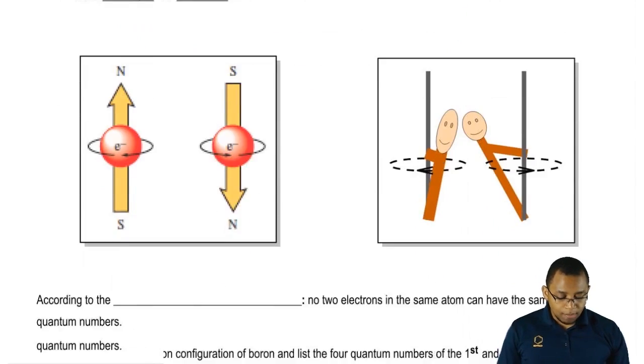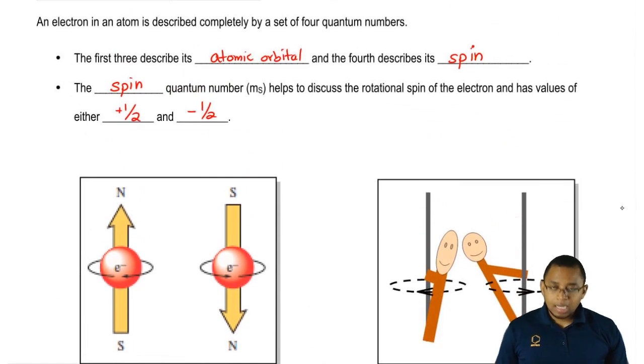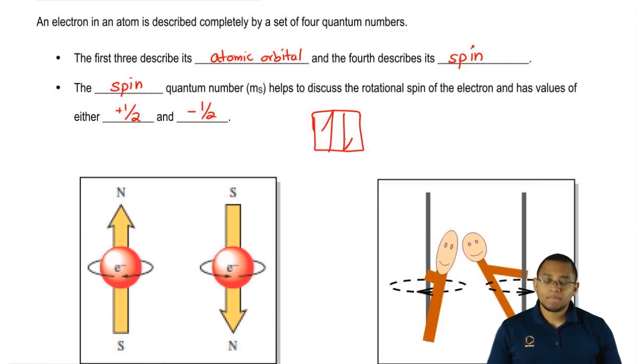So those are the two numbers that are allowed. Now remember, when we talked about an electron orbital, we said in an electron orbital, electrons have to have opposite spins. One would spin up, the other one would spin down. All this means is if it's spinning up, it corresponds to the plus-half number that we talked about. Now, if it spins down, it'd be negative one-half.